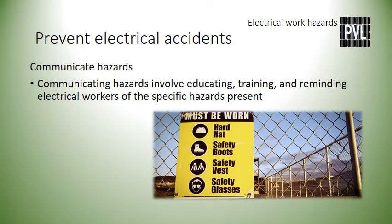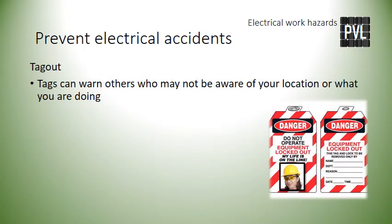You are more likely to encounter live or energized wiring in an existing building. There are different ways to communicate hazards through tagout, talks, training, and signs. Tagout requires the use of a durable tag with your identifying information and highly visible warning text stating the purpose of the tag, such as 'do not operate.' Tags can warn others who may not be aware of your location, hazards present, and what you are doing.